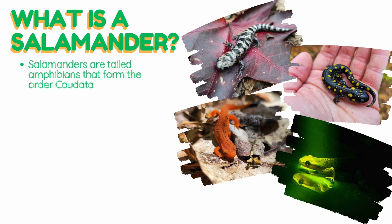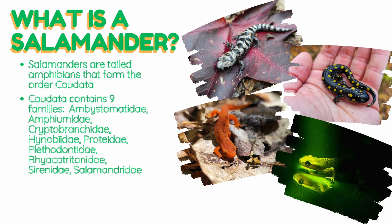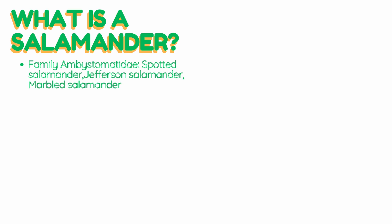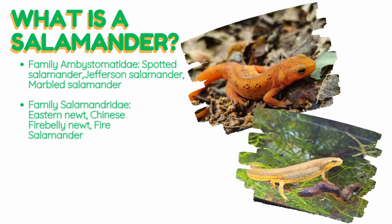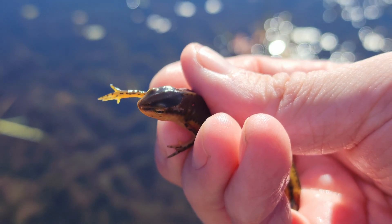Salamanders are tailed amphibians that form the order Caudata — amphibians, just like frogs, not lizards. Within the order Caudata there are nine families. One family, Ambystomatidae, contains very familiar salamanders like the axolotl. Family Salamandridae is also included here, which contains the newts. Ambystomatidae also includes the spotted salamander, Jefferson salamander, marbled salamander, and tiger salamanders. Salamandridae includes species such as the eastern newt, Chinese firebelly newt, and fire salamanders. Pictured here you can see the familiar red eft stage of the eastern red-spotted newt and the aquatic adult.